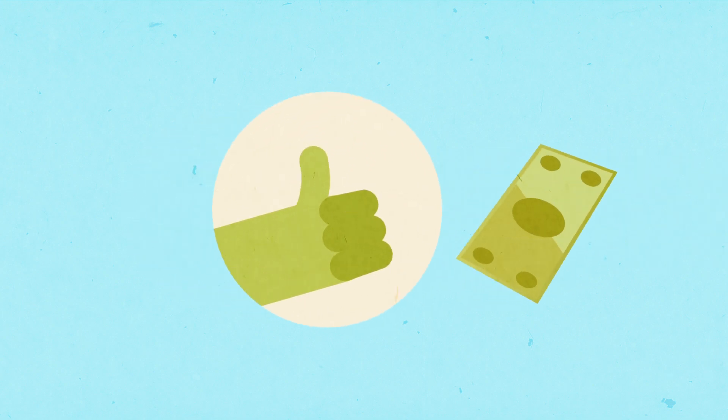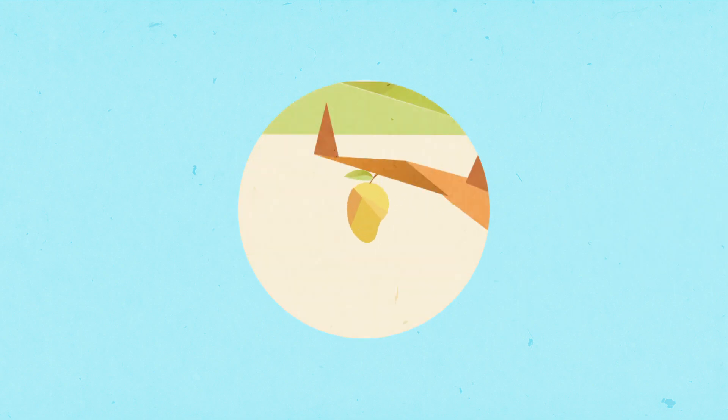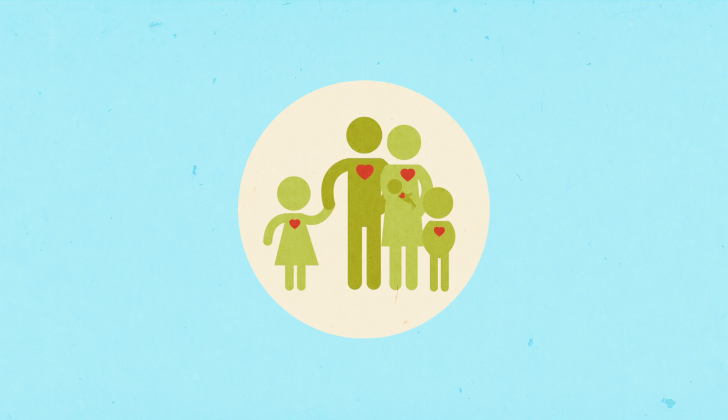And then the cycle repeats itself. A family uses their Arborloo. They plant a tree, fruit grows, children eat, extra fruit is sold, families profit, and the family stays healthier.